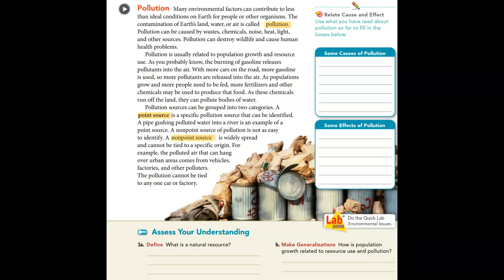Pollution is usually related to population growth and resource use. The burning of gasoline releases pollutants into the air. With more cars on the road, more gasoline is used, so more pollutants are released. As populations grow and more people need to be fed, more fertilizers and other chemicals may be used to produce food. As these chemicals run off the land, they can pollute bodies of water.